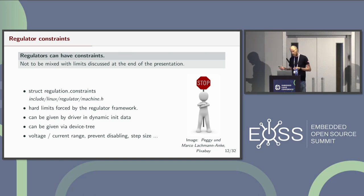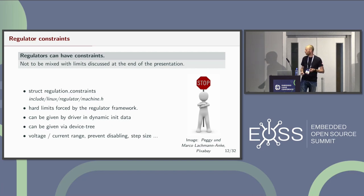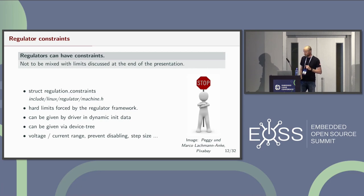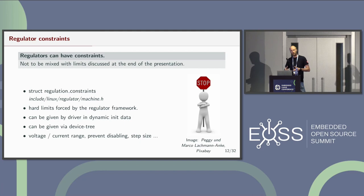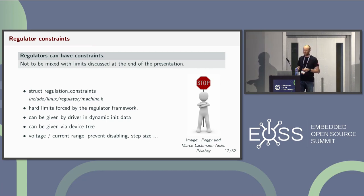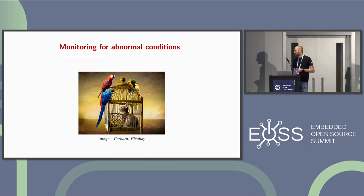Mark — who maintains the regulator subsystem — reviewed this and asked me to add something about constraints. Regulators can have constraints: you can give boundaries, limits within which those regulators must operate, for obvious safety reasons — for example, you don't want to fry your devices. You can give these constraints from the device tree or from initialization data. The core parses the device tree and gets the initialization data, and does not forward requests outside the constraints to the regulator driver. So the core is already stopping bad things from happening.